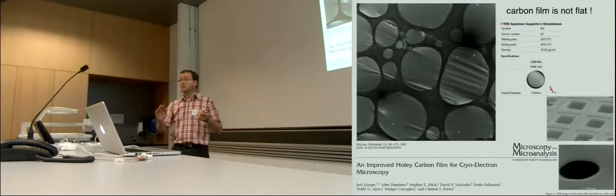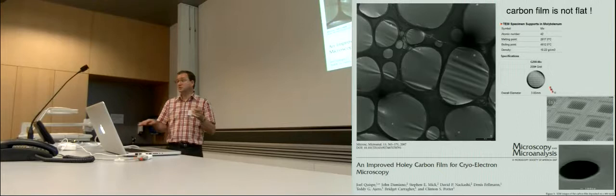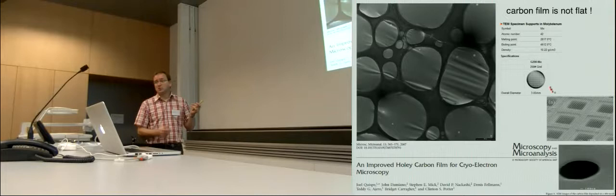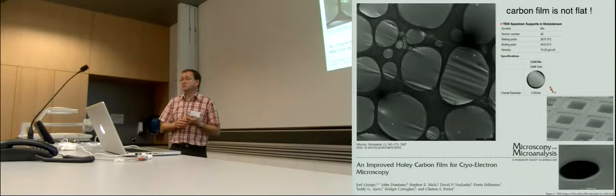And one solution would be first to use improved holey carbon film like here, which is more flat. I think these are the C-flat grids. And you could also think that the copper that you use is shrinking more than other materials in the cryo. And then you would use molybdenum grids that are better.